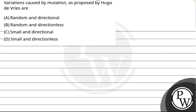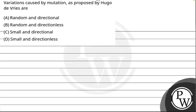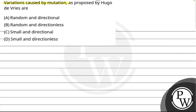Hello, let's read the question. The question says: variation caused by mutation as proposed by Hugo de Vries — and the options are: random and directional, random and directionless, small and directional, small and directionless.